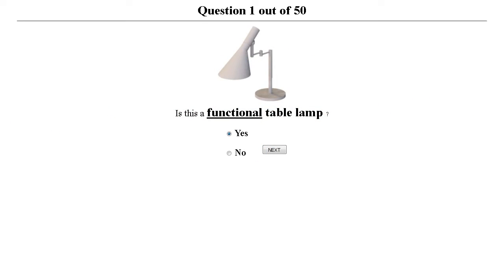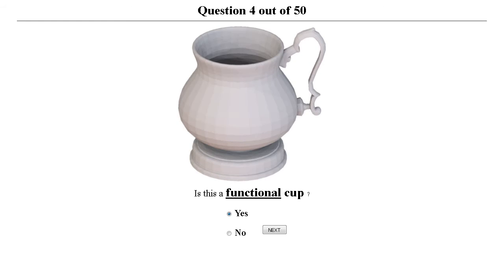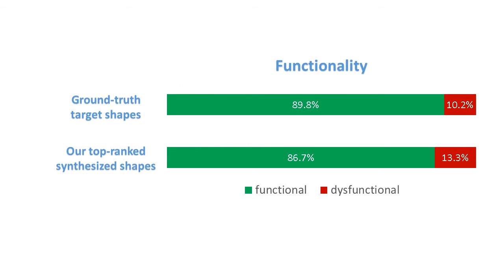The second study evaluated the functionality of the output shapes against other alternatives such as the original ground truth target shapes. Our outputs are deemed functional at nearly the same rate as the ground truth shapes.